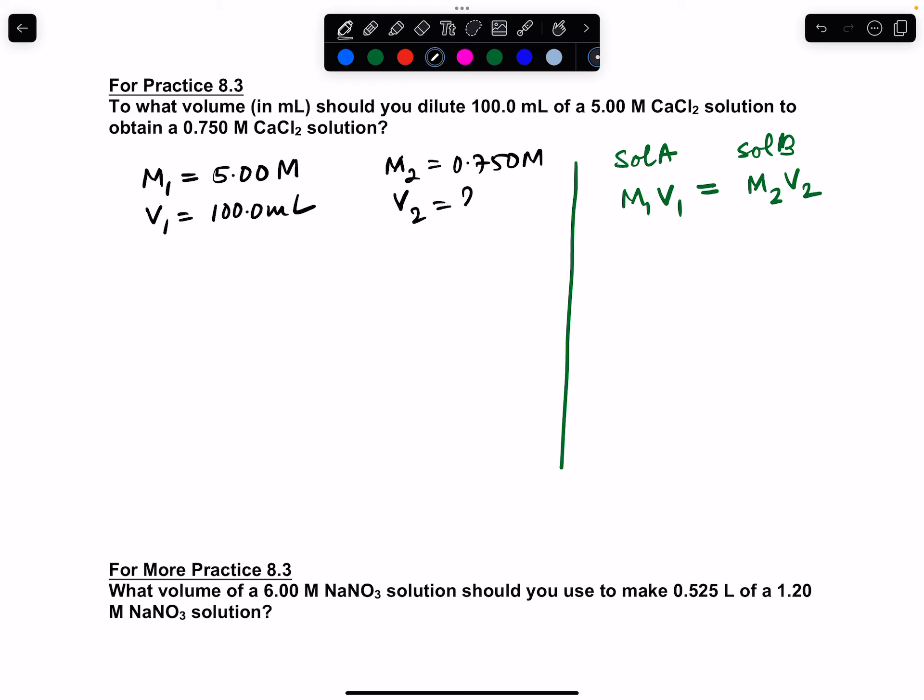Using this formula, we have M1V1. We'll write out the formula first: M1V1 equals M2V2. Let's rearrange it to isolate V2, so we get V2 equals M1V1 over M2. Now let's plug in the quantities: that's 5.00 M times 100.0 mL over 0.750 M.